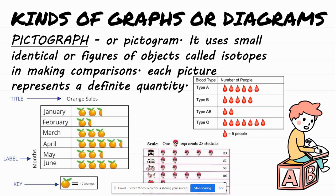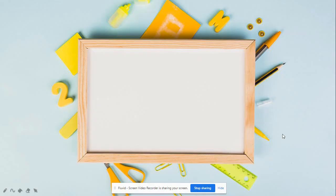Let us generalize the three different methods of presenting data. In textual presentation, we use words and present our data in narrative or paragraph form. In tabular presentation, data is presented using tables. In graphical presentation, we use different types of graphs. Those are the different methods of presenting data, and your activity will be posted in our Google Classroom.